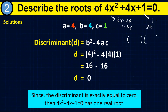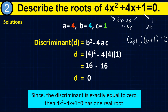Using the factors 2x and 2x with 1 and 1, we compute the sum of the outer and inner products: 1 times 2x equals 2x, and 2x times 1 equals 2x. Adding them: 2x plus 2x equals 4x, which matches our middle term. So the factored form of the equation is (2x plus 1)(2x plus 1) equals 0.